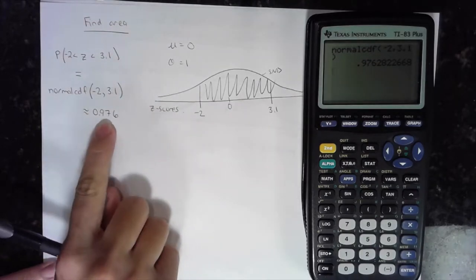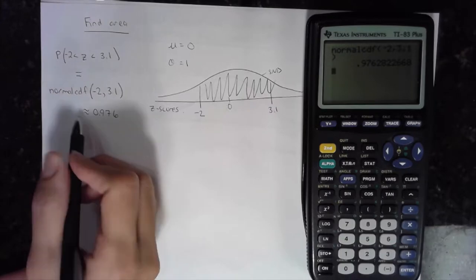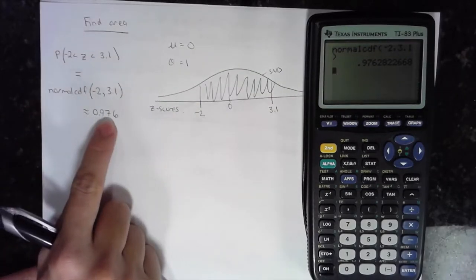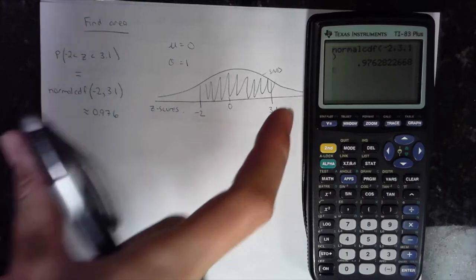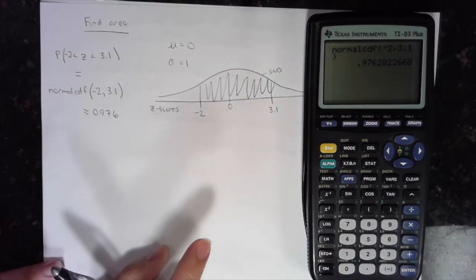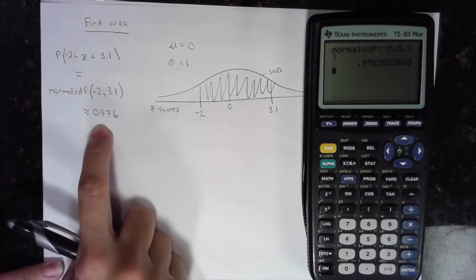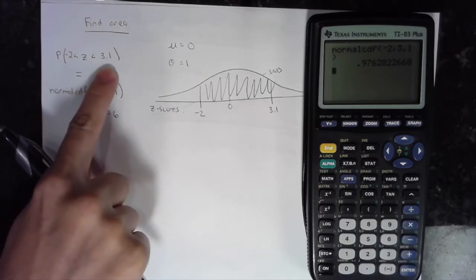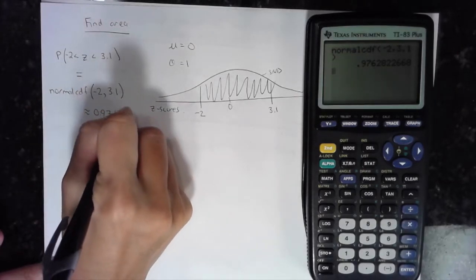We typically round to three digits to the right of the decimal place. The squiggly equal sign implies approximately. So the area of the shaded region is about 0.976 — which should be less than 1, because the total area under the curve is 1. Or, the probability that I randomly choose a z-score and it's between negative 2 and 3.1 is 0.976, or 97.6%.